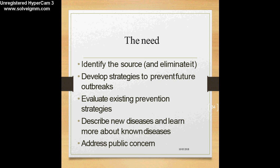We also need to evaluate existing prevention strategies — to look at whatever exists for prevention, whether it is working or not, and refine it if necessary. Another rationale is to describe new diseases and learn more about known diseases. For example, SARS was not known to us earlier, but based on epidemic investigation we were able to describe the epidemiology of the new disease. For known diseases, we can also identify whether there has been a change in the trend or epidemiology.